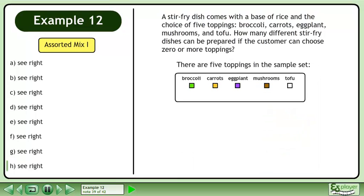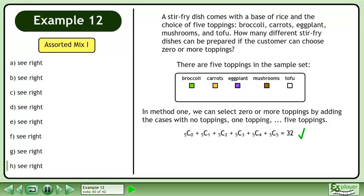There are five toppings in the sample set. In Method 1, we can select zero or more toppings by adding the cases with no toppings, one topping, all the way to five toppings.